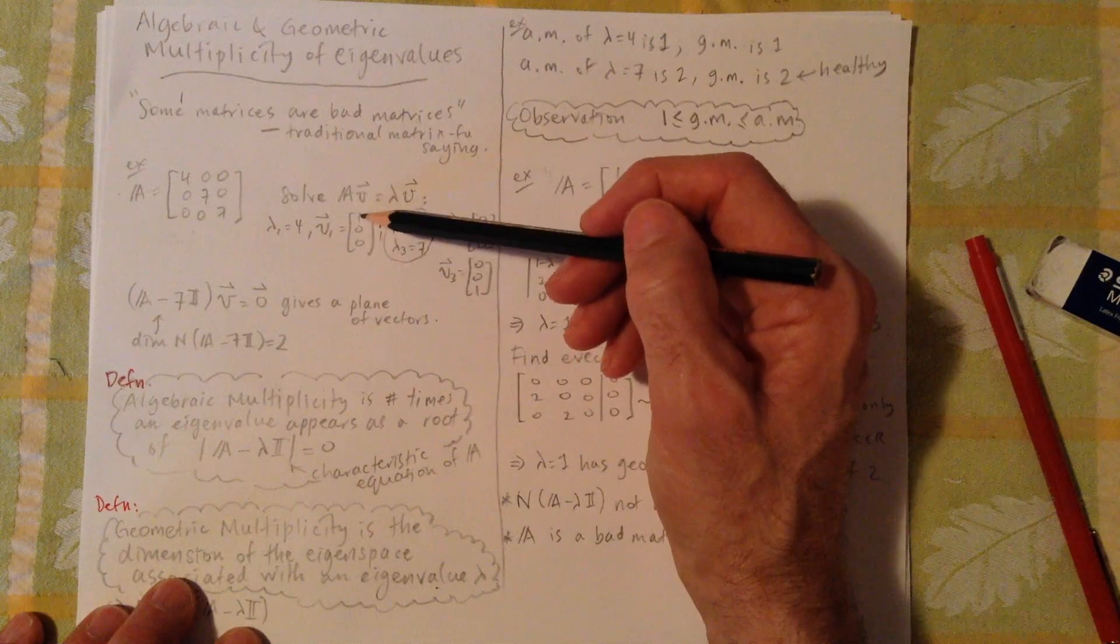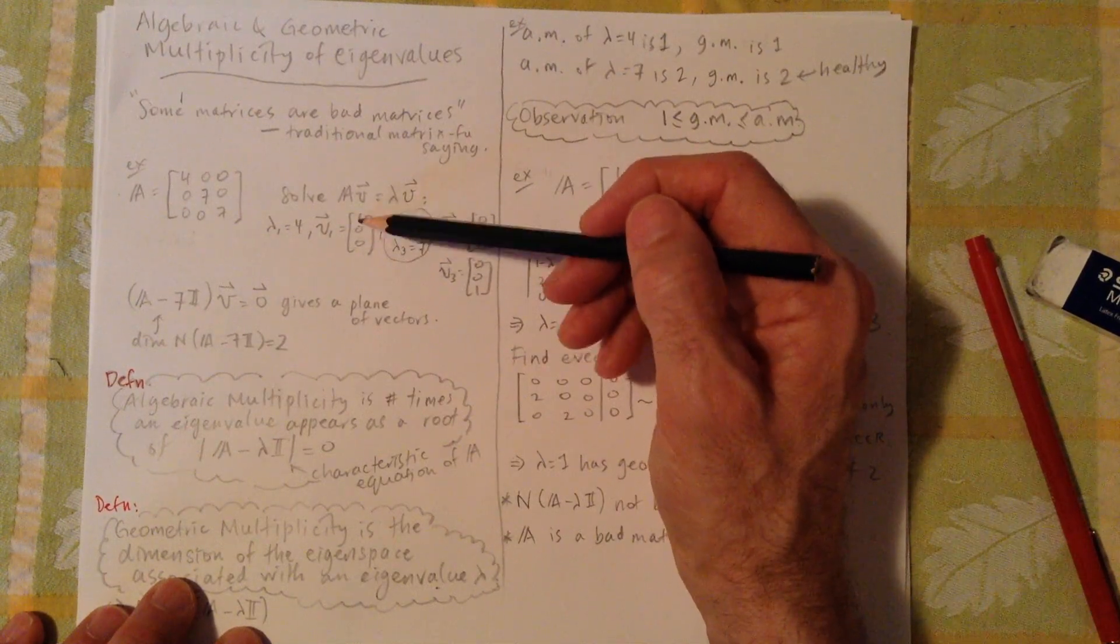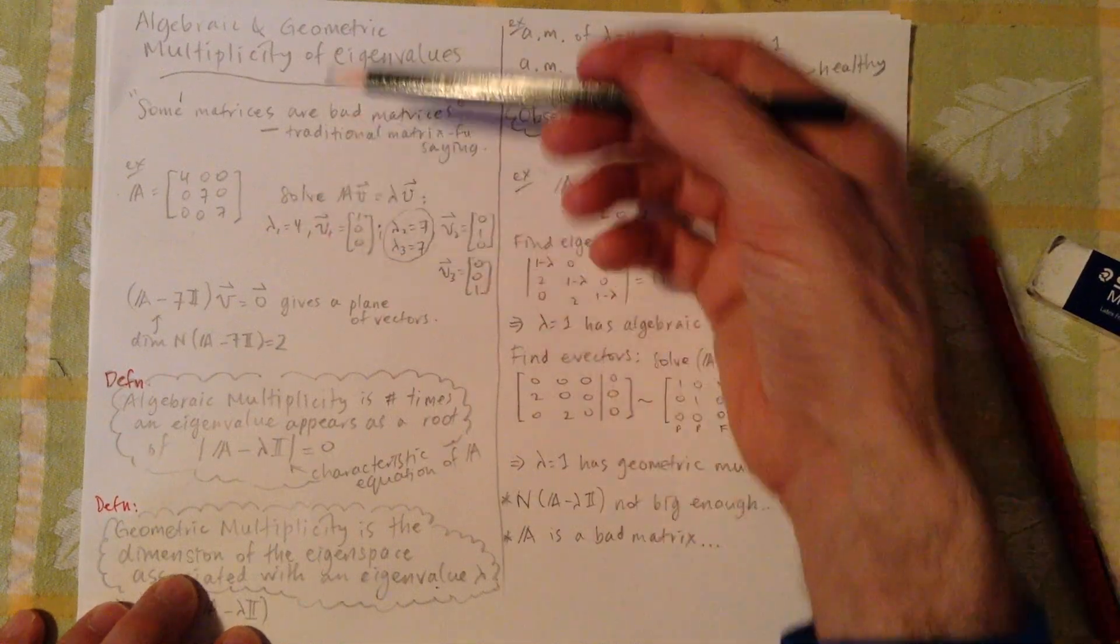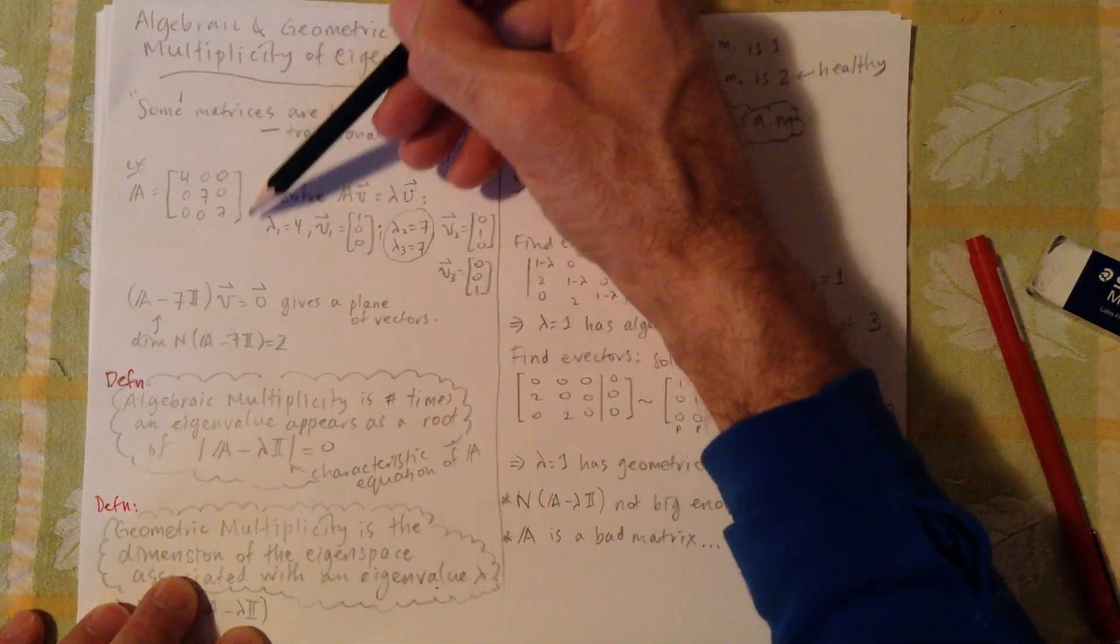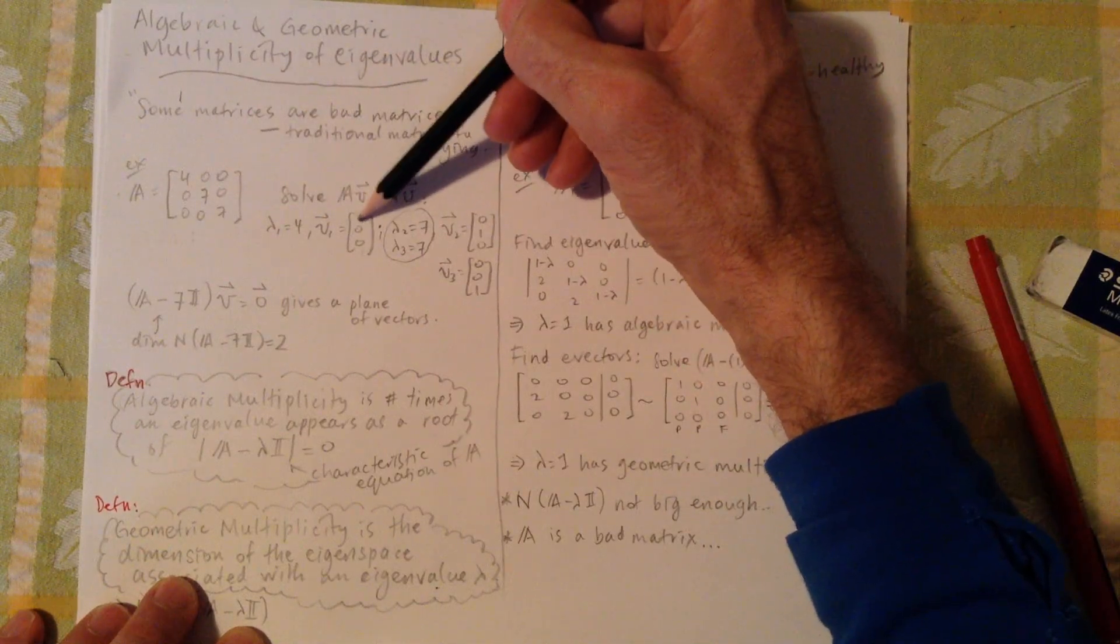You end up with 1, 0, 0. So that's the x direction, if you like, in x, y, z. That's the direction that this matrix multiplies by a factor of 4. You can see that's clearly what happens, right? It would amplify any vector, this part by 4.